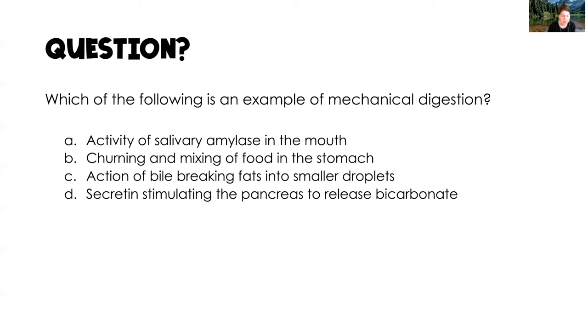Which of the following is an example of mechanical digestion? The answer is the churning and mixing of food in the stomach. Salivary amylase is chemical digestion, bile is chemical digestion, and secretin is chemical digestion.